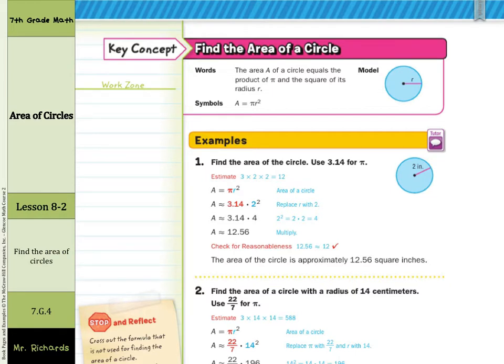So find the area of the circle. Use 3.14 for pi. We have our area formula, pi times radius squared. We substitute in 3.14 for pi and 2 squared. Now notice, we take our radius squared first, before we multiply by 3.14, to get an approximate area of 12.56 or 12 and 56 hundredths square inches.